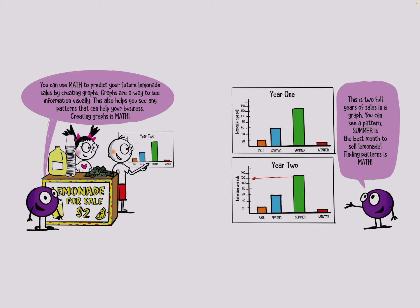This is two full years of sales in a graph. You can see a pattern. Summer is the best month to sell lemonade. Finding patterns is math.